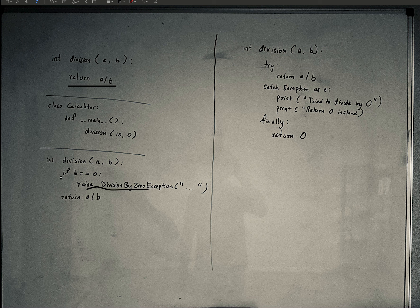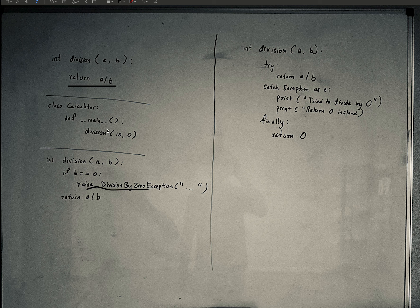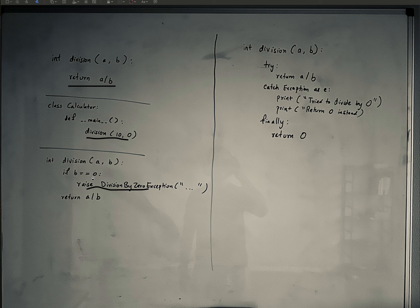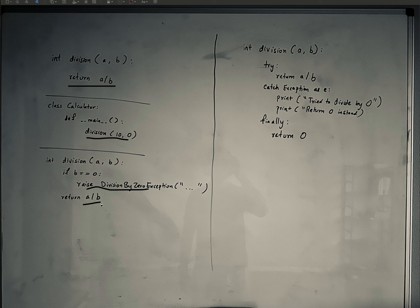So when you call this function division(10, 0), it will say if b is equal to zero, then raise that exception, otherwise return a divided by b.